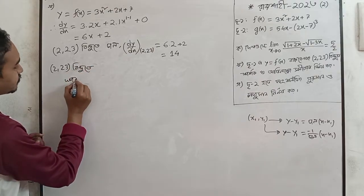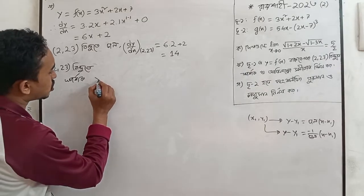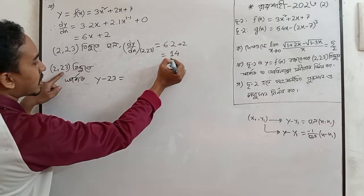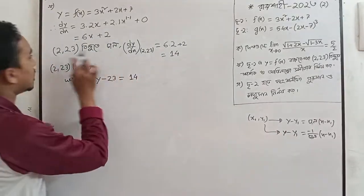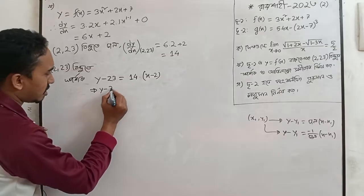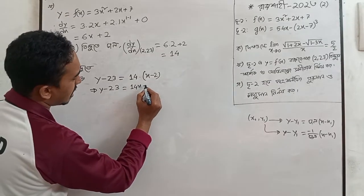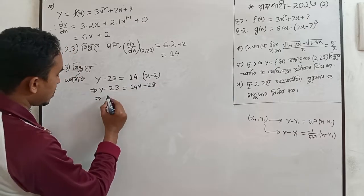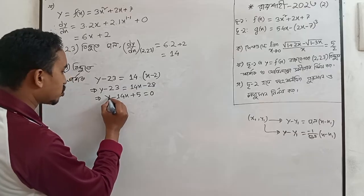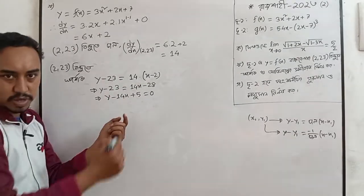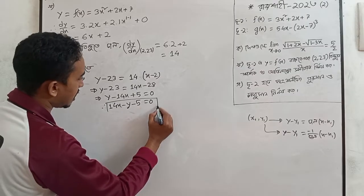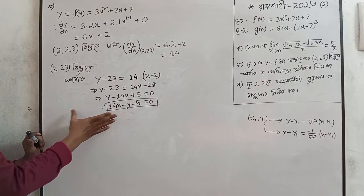So for the tangent line, y minus y1 equals slope times x minus x1. With y1 equals 23, slope equals 14, x1 equals 2: y minus 23 equals 14 times x minus 2, so y minus 23 equals 14x minus 28. Therefore 14x minus y minus 5 equals 0.